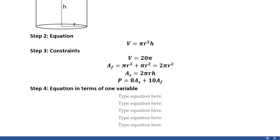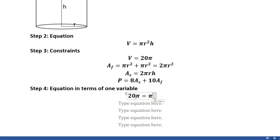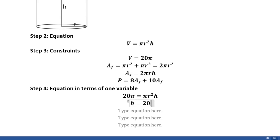In step 4, we'll be attempting to solve the equations we got in steps 2 and 3 in order to get an expression in terms of a single variable — in this case, in terms of r. We start by looking at V = πr²h. Since we know from our constraints that V = 20π, we set those equal: 20π = πr²h. We can solve this to get h in terms of r, which gives us h = 20/r². The π's cancel each other out.